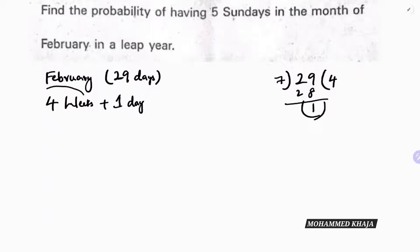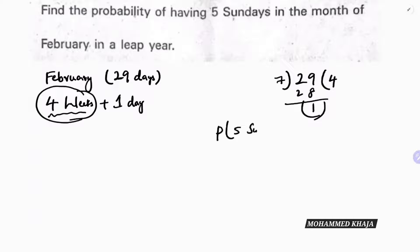Since we have four complete weeks, every day — Sunday, Monday, Tuesday, and so on — will occur exactly four times. But the question is: what is the probability of having five Sundays?